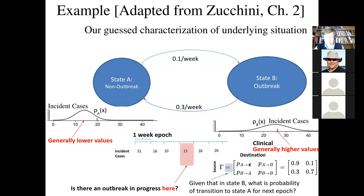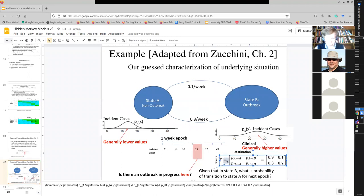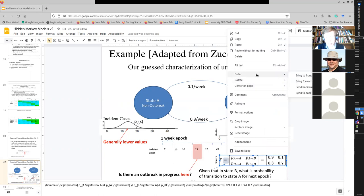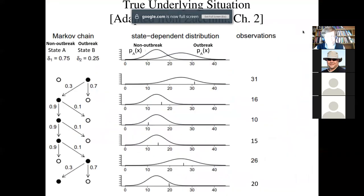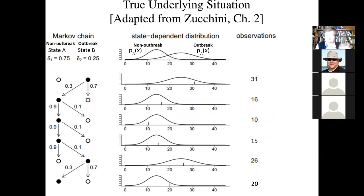If we are currently in a non-outbreak state, we have a 0.9 chance of staying there and a 0.1 chance of going to an outbreak state. If we're in an outbreak state, we have a 0.3 chance of transitioning to non-outbreak and a 0.7 chance of staying in the outbreak state. We call this transition matrix tau — that's the Greek letter tau. There's an underlying system: at any one time it's in a state, and conditional on that state it produces draws from that distribution, transitioning among states over time.